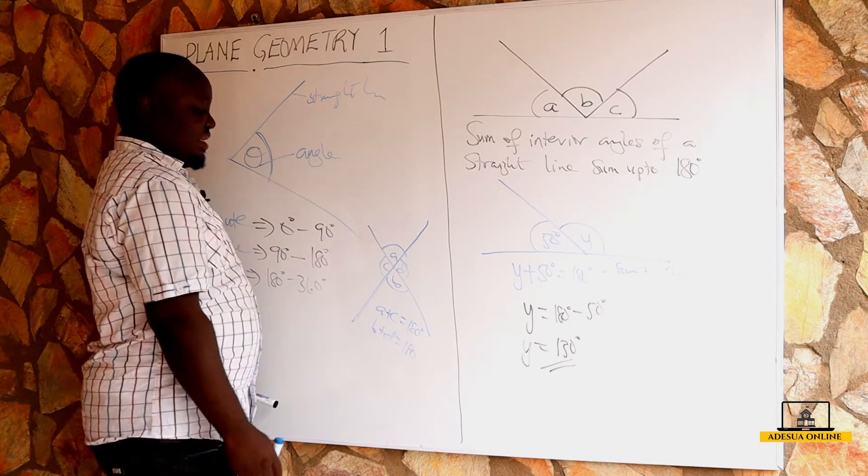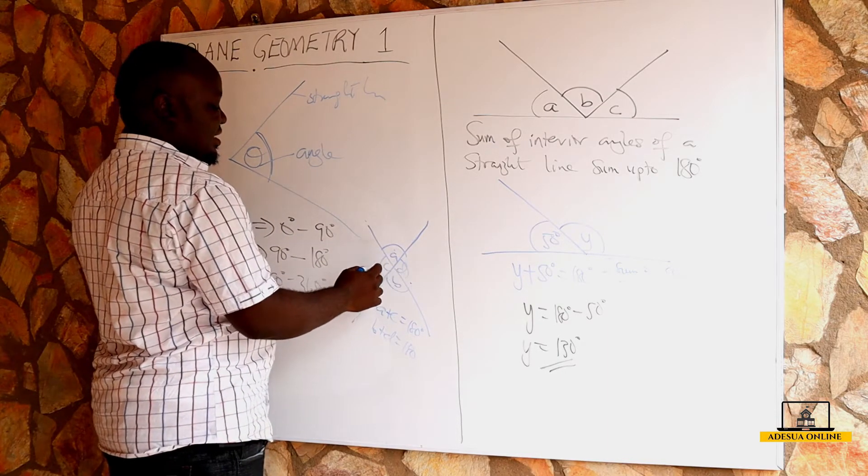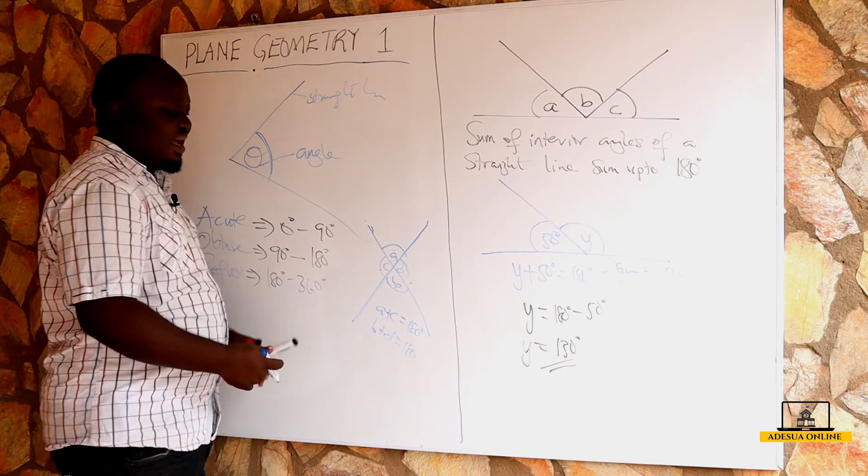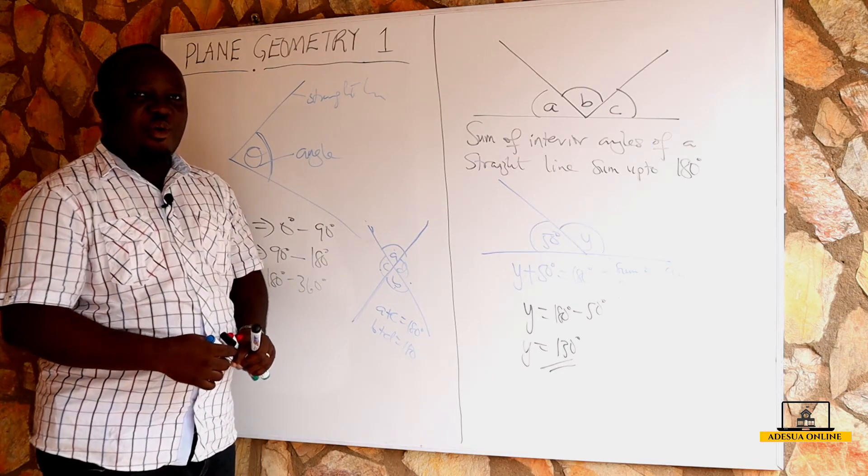The same way, you can pick this as a straight line: A plus B is also 180, and C plus D is also equal to 180 if this is a straight line. So there are other ways of solving them, and we shall learn some more examples.